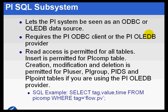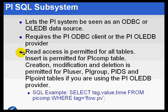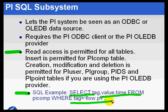We have another subsystem called the PI SQL Subsystem. It implements what we call our ODBC and OLEDB driver, allowing the PI server to be seen as though it were an ODBC or OLEDB data source. It requires a provider client from the PI data access package. It allows read access for tables and write access for some tables. So if you're a Power Builder, Microsoft Access, or Crystal Reports user who wants to see PI data without learning the data link tool, just get the ODBC/OLEDB client and do select statements, joins, and so on in your native application.